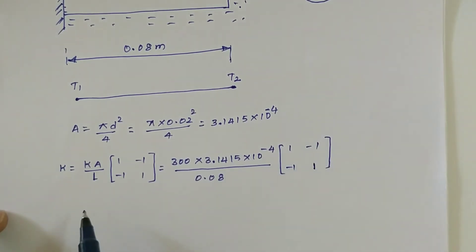After simplification, the K value we are going to get is [1.1780 -1.1780; -1.1780 1.1780]. This is the thermal conductivity matrix.